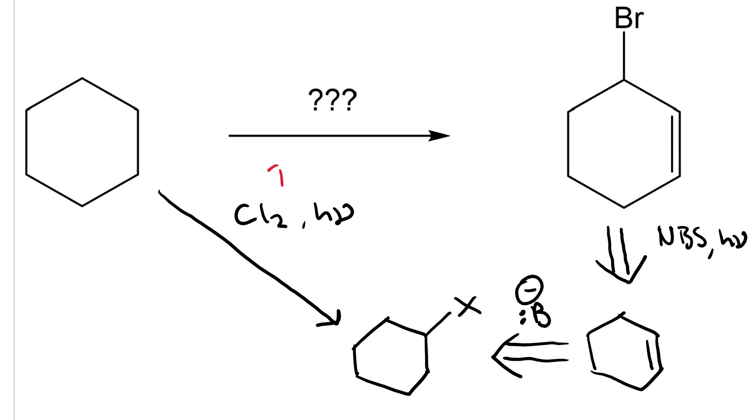So now our first synthetic step is radical chlorination, our second step is elimination, and our third step is allylic bromination.